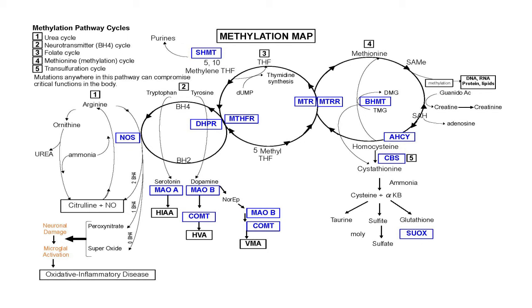MTHFR A1298C controls the SAMe in your body because at the A1298C site it has a receptor that interprets the level of SAMe in your body. If it gets too high, it switches on that receptor, which makes cycle number 4 go in a retrograde direction and take apart the SAMe in your body. Cycle number 3 also goes in a retrograde direction and it significantly dismantles the conversion of homocysteine into methionine and hence the number of methyl groups produced in your body. Let me take this chart down for a minute.